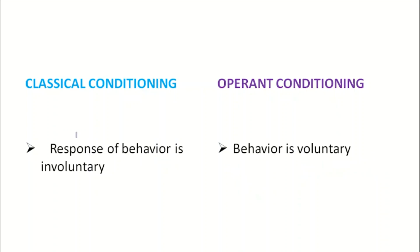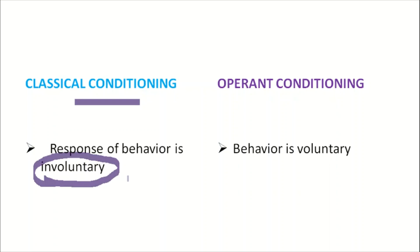In classical conditioning, response or behavior is involuntary, whereas in operant conditioning behavior is voluntary — the subject decides whether to repeat the behavior or not based on the consequences of its reward or punishment.